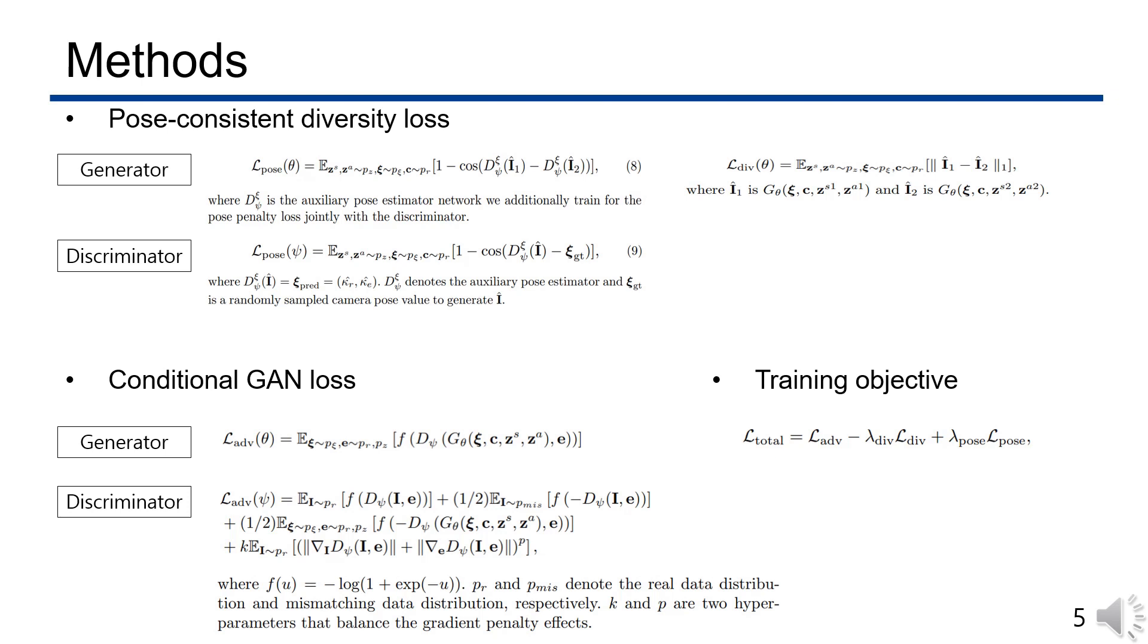Second, to synthesize conditional outputs, we adapt a conditional GAN by training a discriminator that learns to match images and the condition feature vectors. The total training objective is defined with the sum of an adversarial loss and our proposed pose-consistent diversity loss.